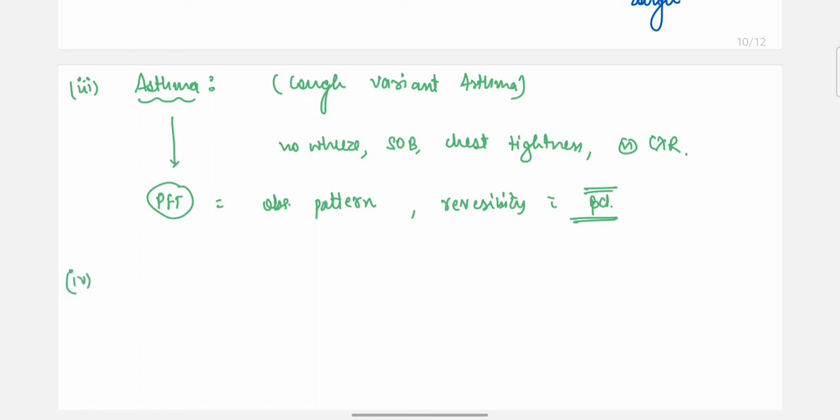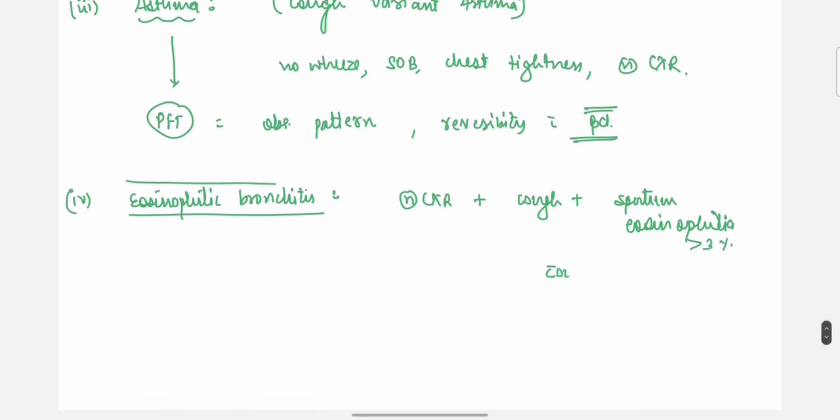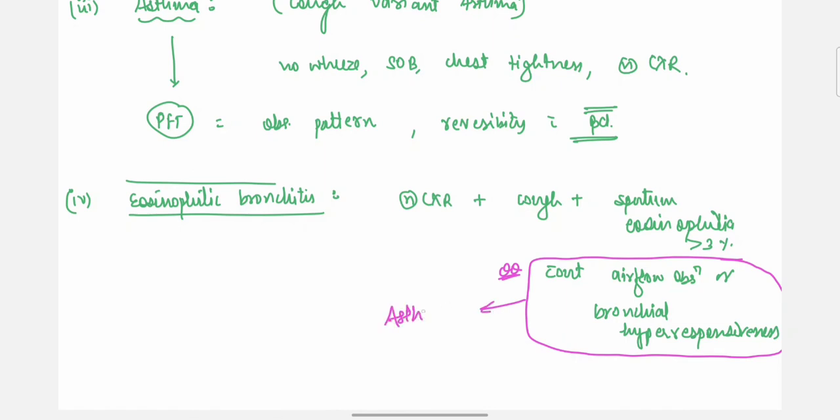The fourth cause of chronic cough with normal X-ray is eosinophilic bronchitis. Eosinophilic bronchitis is defined when there is normal chest X-ray with cough, with sputum examination having eosinophilia of more than 3%, without airflow obstruction or bronchial hyperreactivity or hyperresponsiveness. This is very important, because if this is positive, it will become asthma. So this is the difference between eosinophilic bronchitis and asthma.